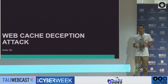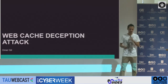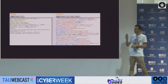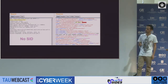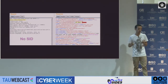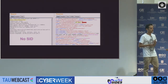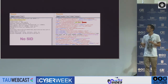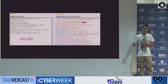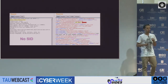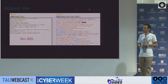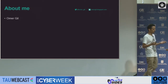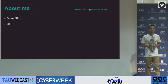Web cache deception is a new web attack vector that allows attackers to easily expose the private content of application users, and in certain cases, to even take complete control over their accounts. I discovered it a few months ago in several websites, including PayPal. By just sending a simple GET request to the PayPal server without adding a session ID or any other cookie, you can easily expose the private content of an application user.